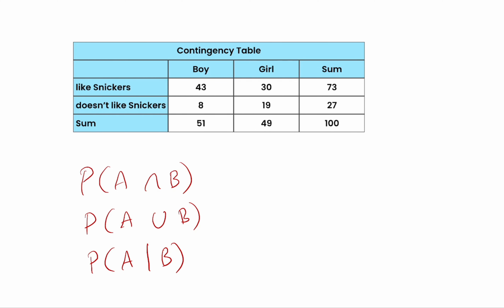A contingency table has different rows and columns for possible categories. In this case, the rows represent whether somebody likes Snickers or does not like Snickers, and the third row is just the sum — the total of those two. As for the columns, there are boys, girls, and then the total.